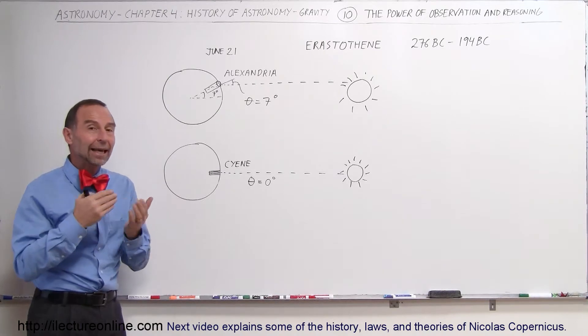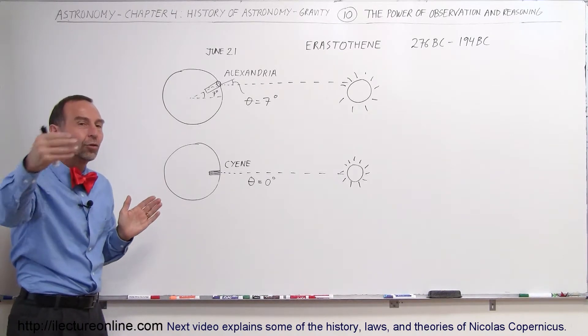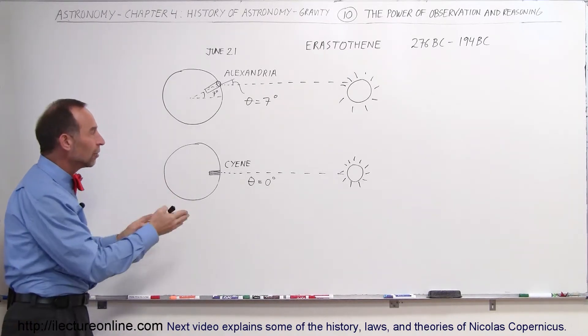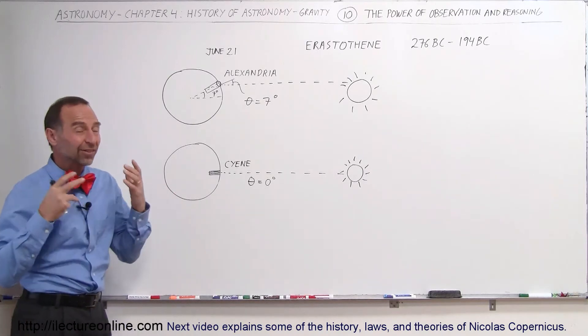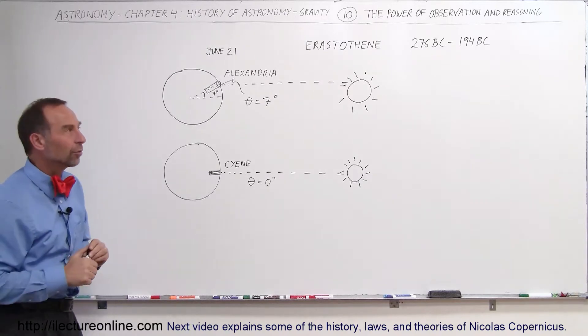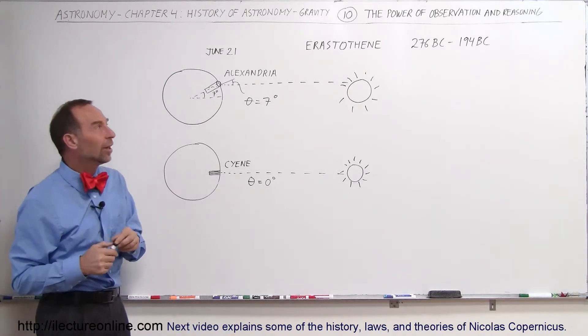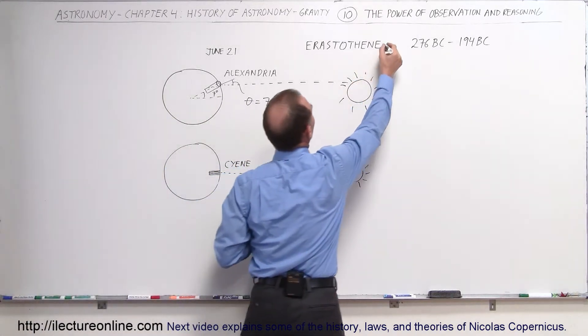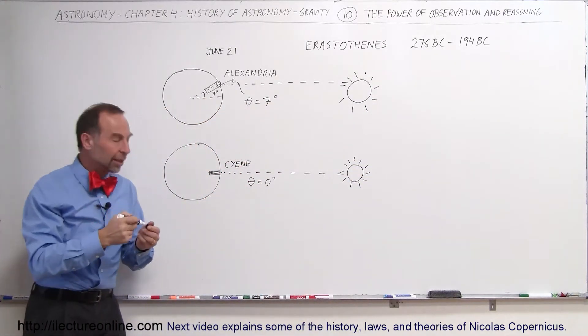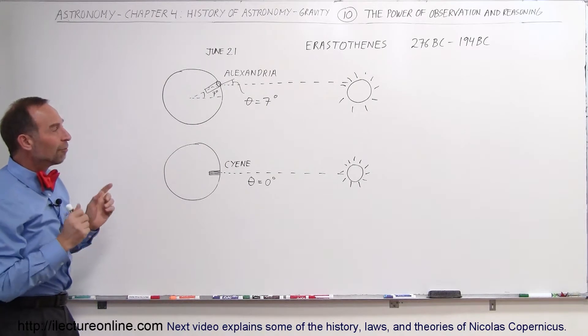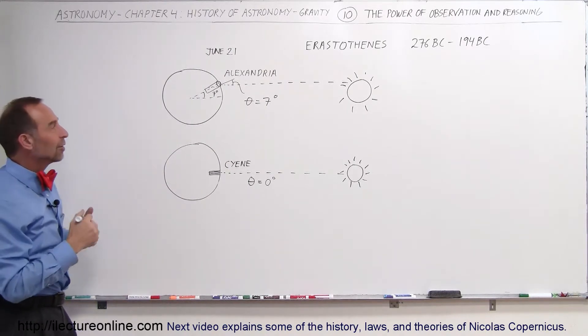And he went ahead and calculated the distance to the Moon relative to the Earth and the distance to the Sun relative to the Earth. But he didn't know what those distances were and what the sizes were because he did not yet know what the size of the Earth was. But it turns out that Eratosthenes, who lived a little bit later than Aristarchus, figured out the size of the Earth in a very ingenious way.